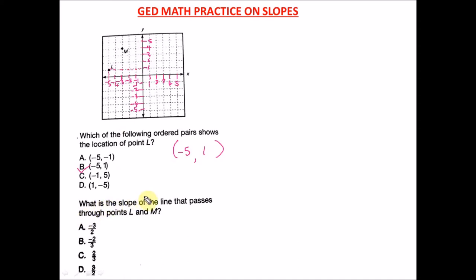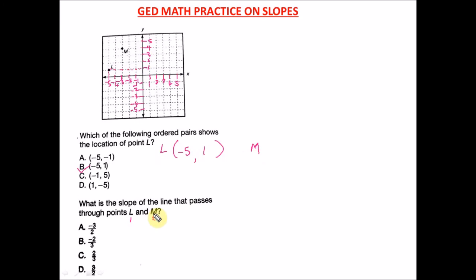The next question asks: what is the slope of the line that passes through point L and M? So L is the first point and M is the second point. We already know point L is (−5, 1). Now let's find the location of point M.